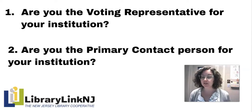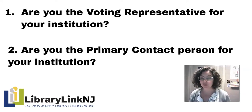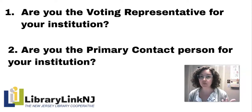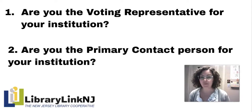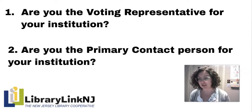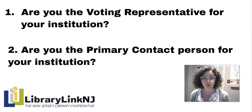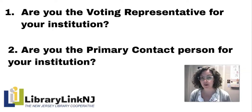After you've determined whether or not your institution is a member, there are only really two other pieces of information that you'll need to know so that you can create your account. The first is whether or not you're a voting representative for your institution, and the second is whether or not you're the primary contact person. In most cases these roles are already being fulfilled by someone at your institution, but if you're new to a very small library or new to a school, you may in fact be the voting representative or the primary contact.